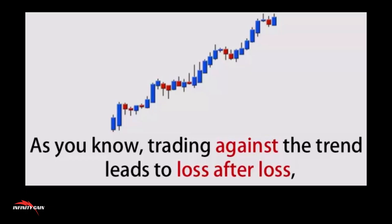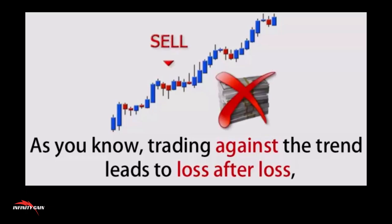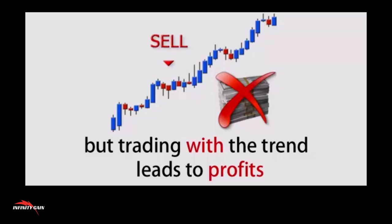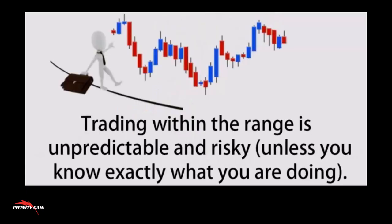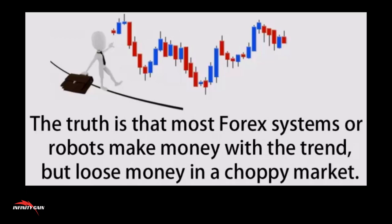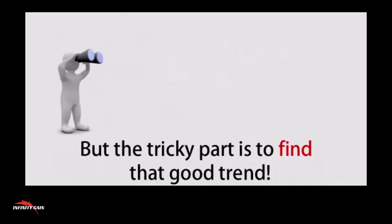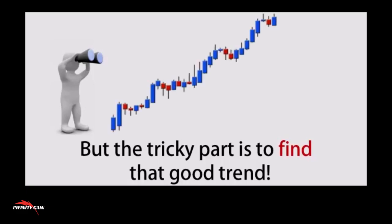As you know, trading against the trend leads to loss after loss, but trading with the trend leads to profits, or at least increases profitability of any method or robot you trade. Trading within the range is unpredictable and risky unless you know exactly what you're doing. The truth is that most forex systems or robots make money with the trend but lose money in a choppy market. But the tricky part is to find that good trend.